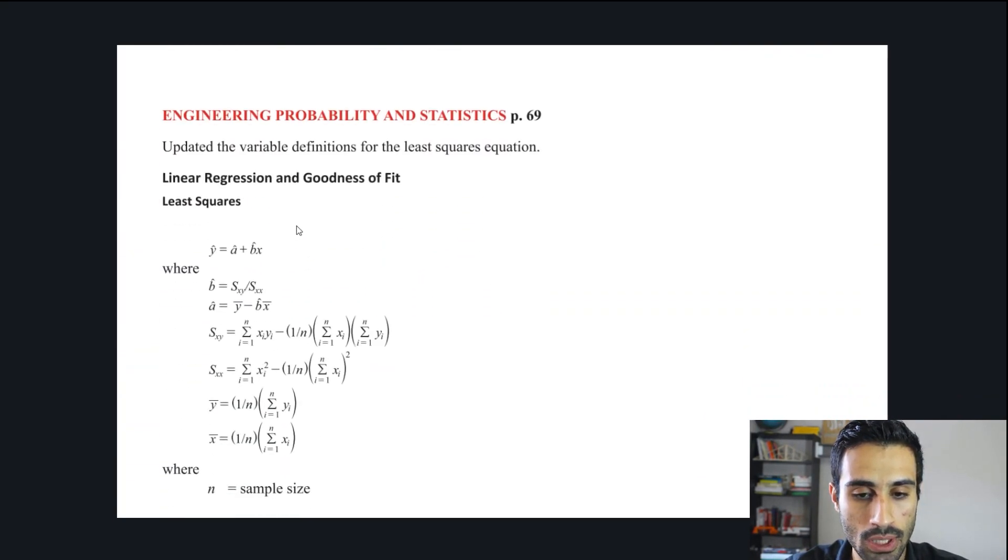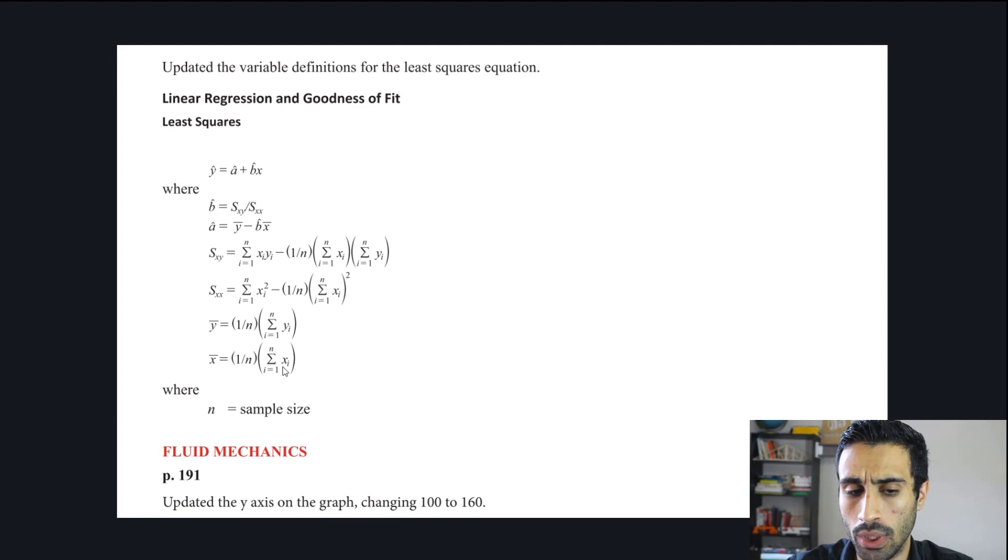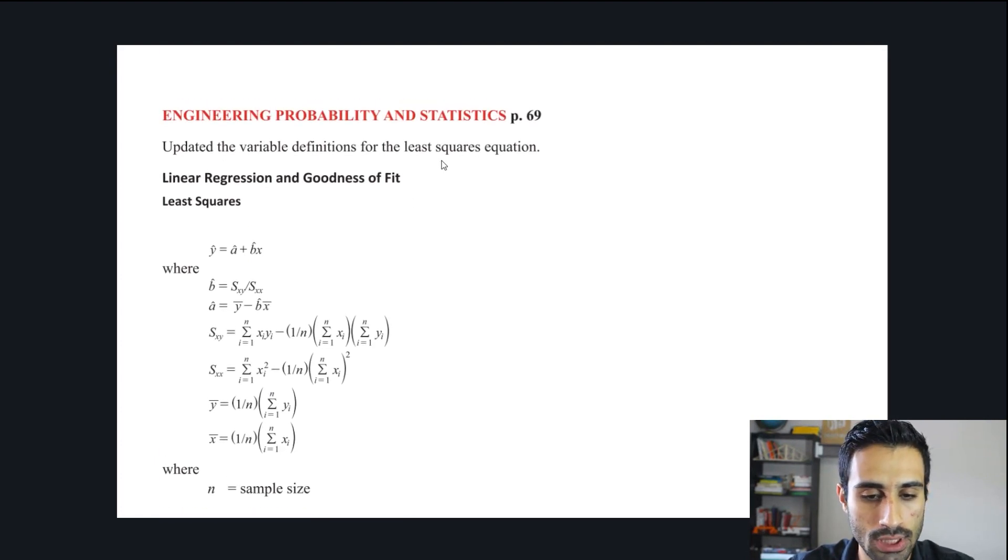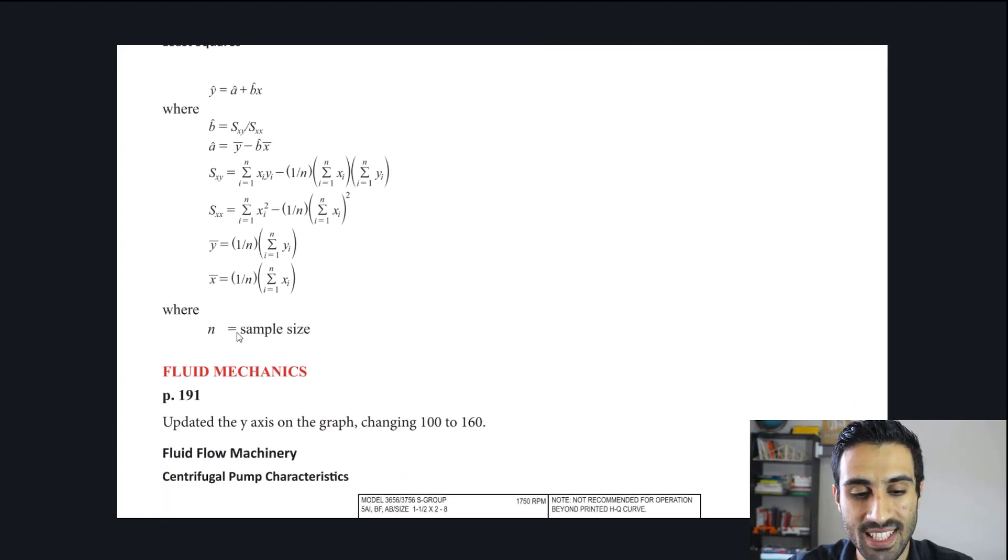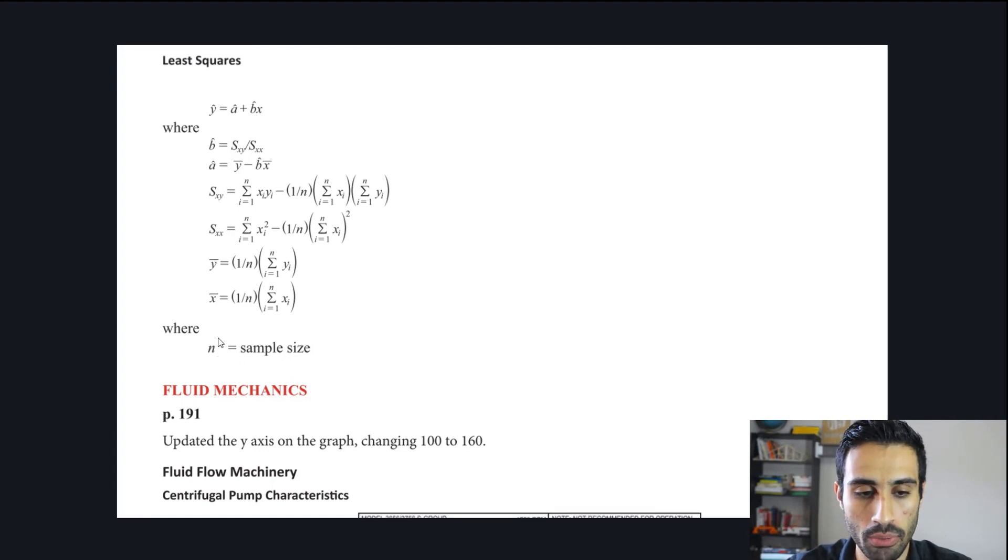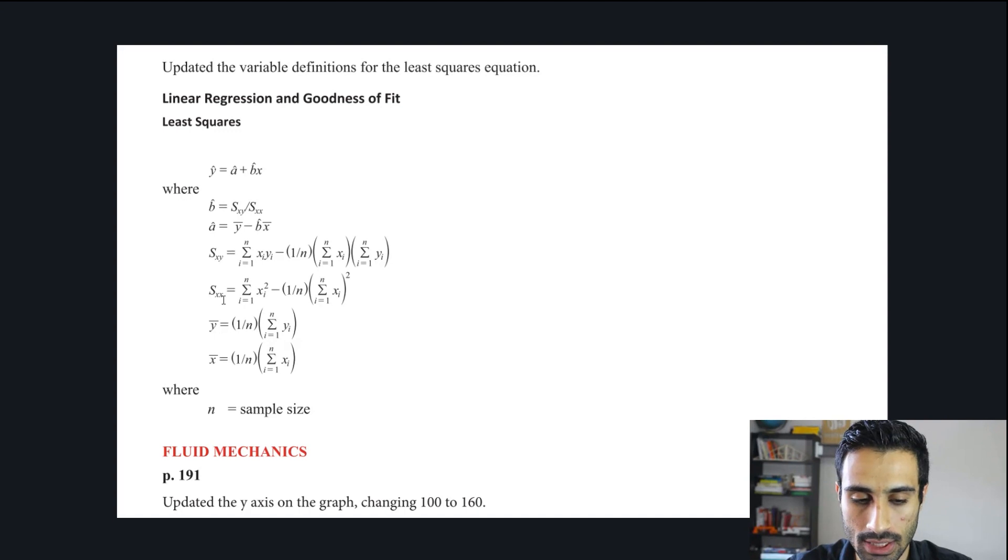Now let's keep going to the next one. Nothing really changed for this. Page 69 for probability and statistics. We're looking at the update of least squares equation. They didn't really change the equation from 10-1. I'm not sure exactly what they're talking about, but they did remove some definitions. They removed the definition for SXY and SXX. Maybe they thought it was confusing students, maybe they thought it wasn't a good definition.